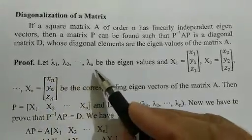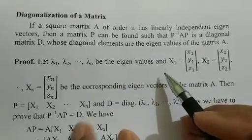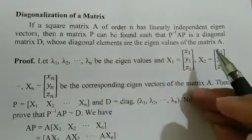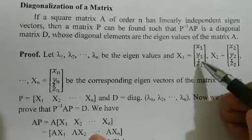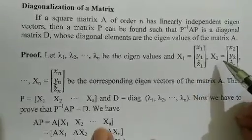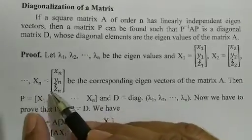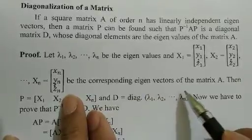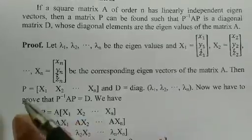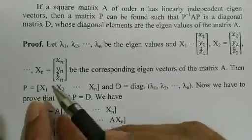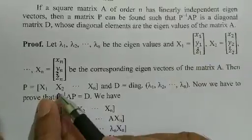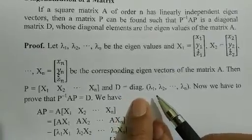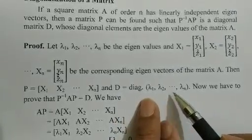Let λ1, λ2, ... λN be the eigenvalues and X1, X2, ... XN be the corresponding eigenvectors of the matrix A. Then matrix P contains these eigenvectors X1, X2, ... XN as its columns. And D is the diagonal matrix whose diagonal elements are the eigenvalues λ1, λ2, ... λN.